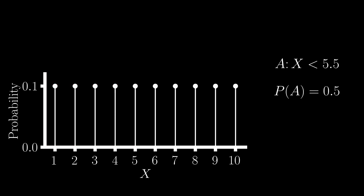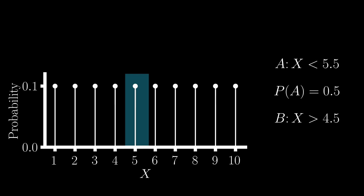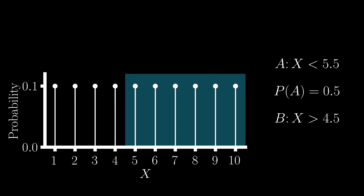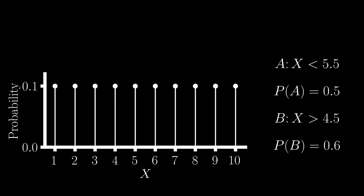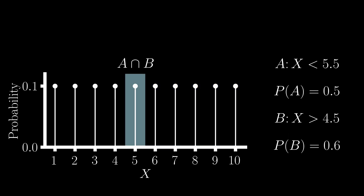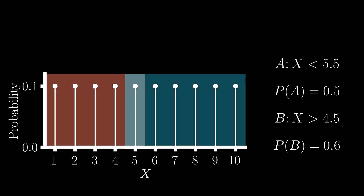We can also define a second event, say B, which is associated with x being greater than 4.5, and can compute the probability of this event through the same process. What we can also note is that it is possible for event A and B to be satisfied on a given toss. If I roll the die and it lands on 5, we are both less than 5.5 and greater than 4.5. We refer to this as the intersection or joint occurrence of two events, and its probability is the summation of all shaded probabilities in the region. So, now that we understand random variables, events, and their associated probabilities, let's cover conditional probabilities, which are the basis of Bayes' theorem.